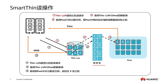If the queried area already has actual physical space allocated, the host performs a read operation in that area, reads the corresponding data, and returns it to the host. If no actual physical space has been allocated, it will return all zeros to the host. That is our read operation.